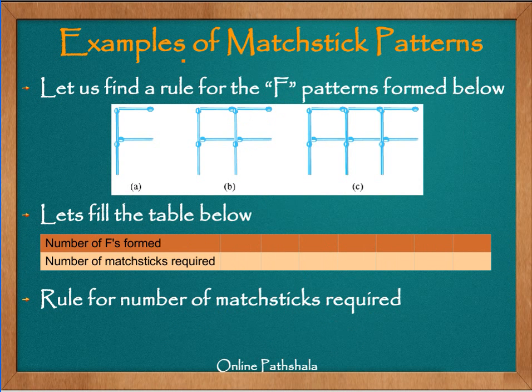Having said that, let's look at another example. Now in this case, we are supposed to form an F pattern using matchsticks. And we have to find out the rule for the number of matchsticks required when I want to form a certain number of F patterns. So we proceed as we did earlier. We have made a table here. In the first row, we show how many Fs are formed. So we will write 1, 2, 3, 4, 5, 6, and 7. We're just going to fill this table for 7 Fs.